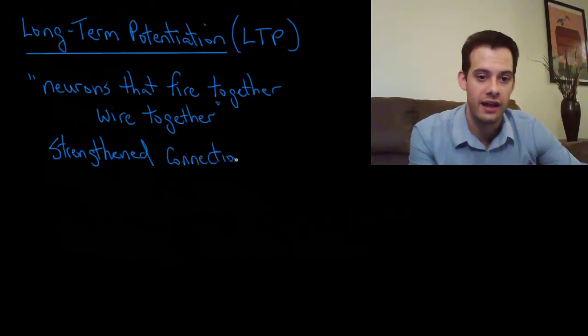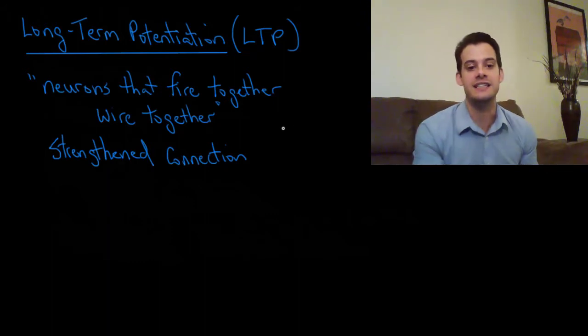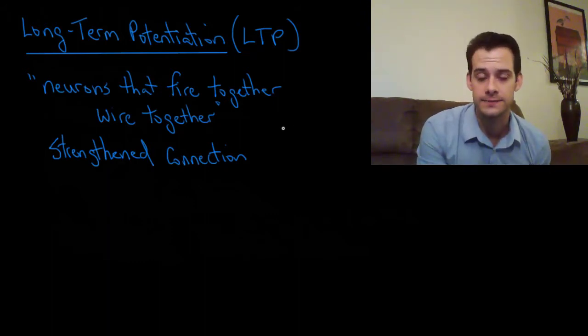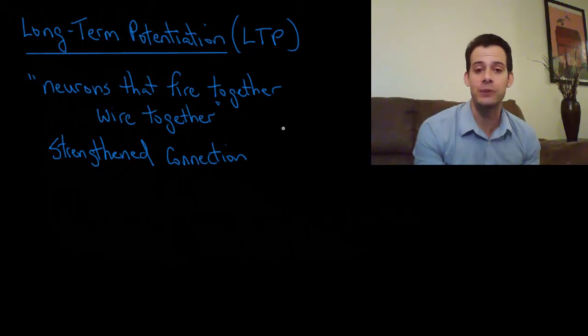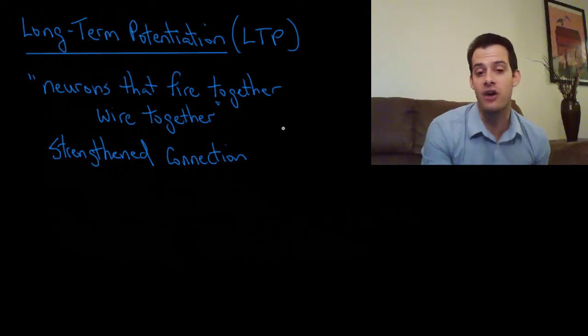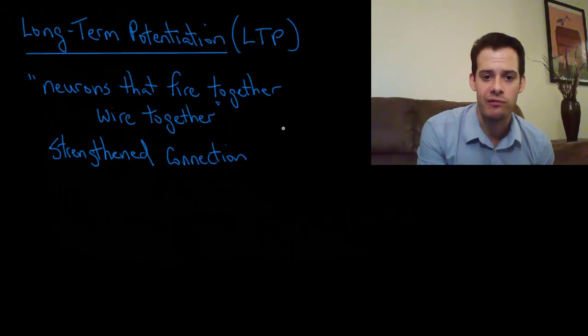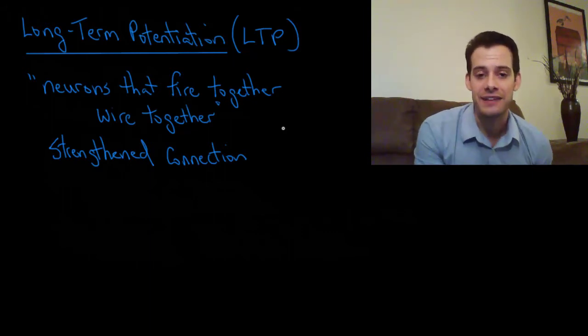And since they're not physically connected, this connection occurs in the form of chemical signaling. So how does this work? Imagine we have two neurons that are firing together repeatedly. So the first neuron fires and this causes the second neuron to fire. By repeating this process over and over again the interaction at the synapse changes.